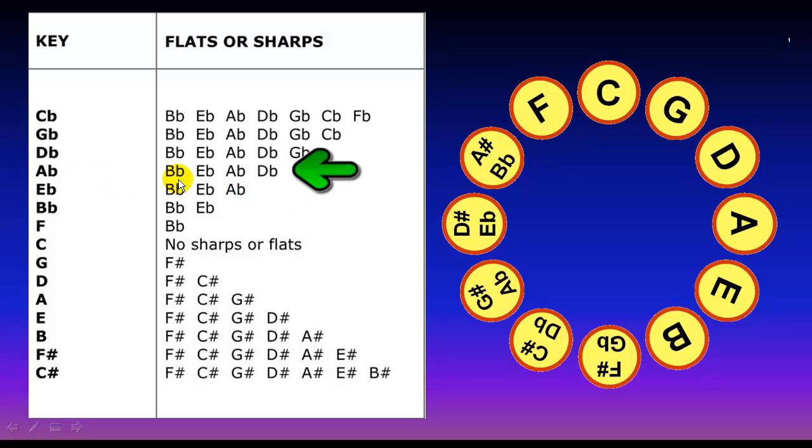For the A flat key, there are four flats: B, E, A, D. You look at the circle. B, E, A, D. It always goes in this kind of order.